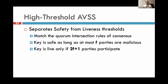The basic idea of HAVSS is that we separate the safety from the liveness thresholds to match the needs of consensus. In our HAVSS, the key is safe as long as at most f parties are malicious. If we get f+1 malicious parties, the key is completely compromised — the adversary can generate signatures as if the whole group is generating them. However, in order for the key to be live, we actually need 2f+1 parties to participate. So if we do see a usage of that key, we know that a 2f+1 quorum agreed on something — and that's what HotStuff and SBFT need.